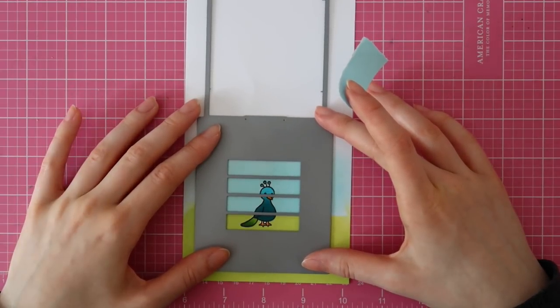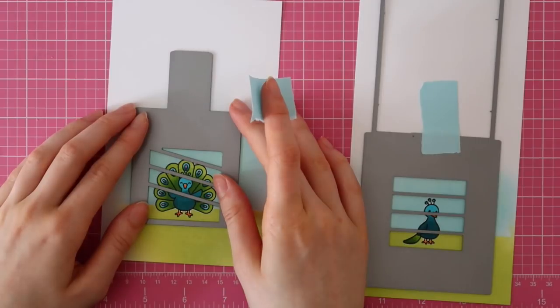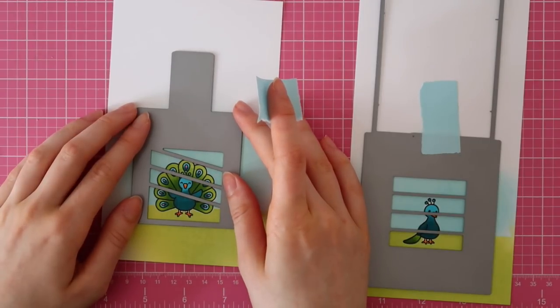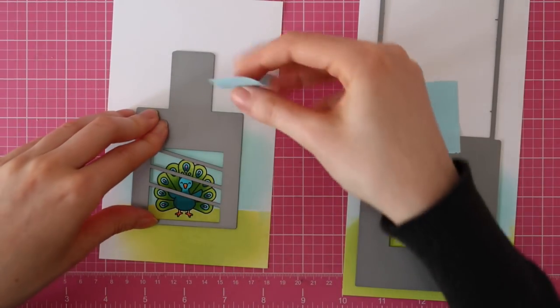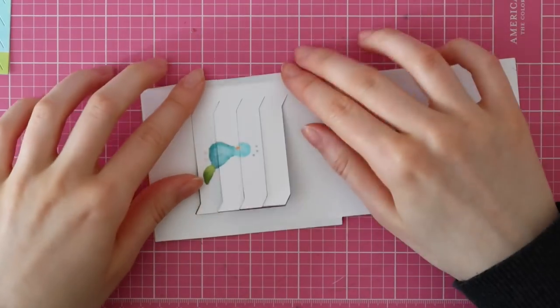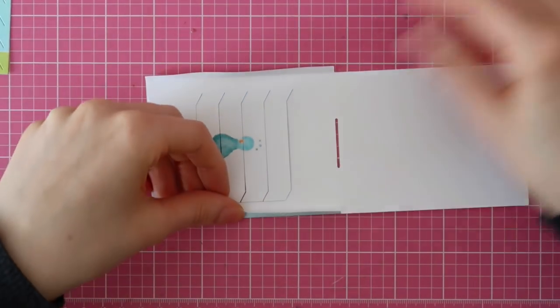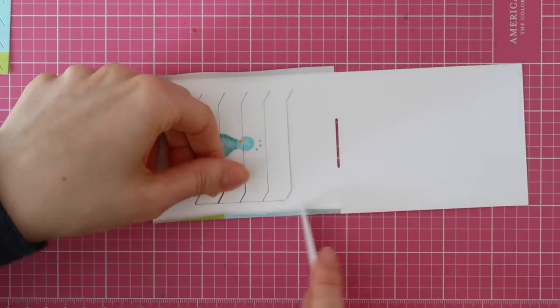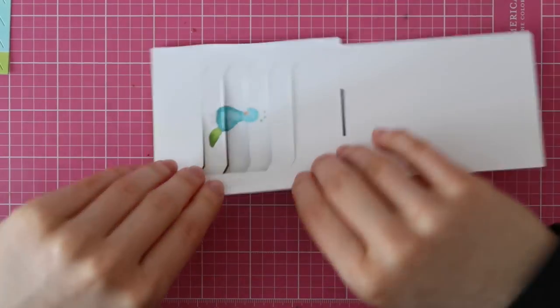It's time to create the Magic Picture Changer card. I am using the Magic Picture Changer die-cut set from Lawn Fawn to create this beautiful interactive card. I die-cut the two main panels and now I am folding along the scored lines with my bone folder.